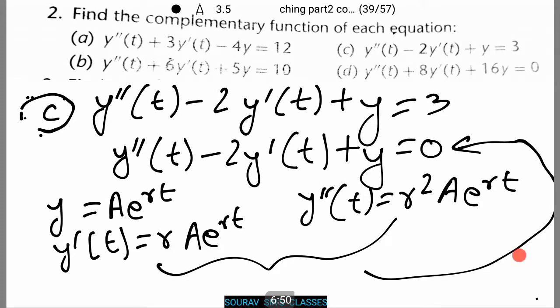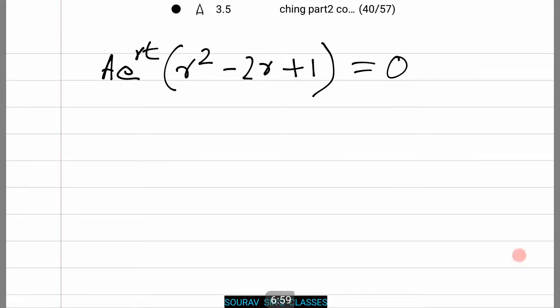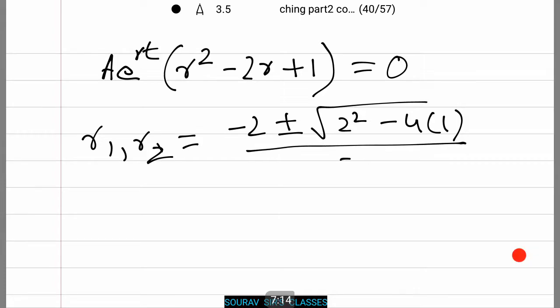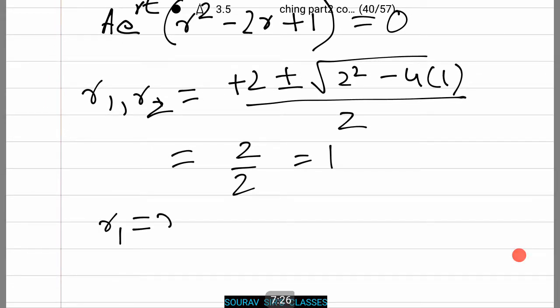Upon substitution we get the following equation. Thus r₁ and r₂ equal minus(-2) plus or minus square root of (2 squared minus 4 times 1) divided by 2, which comes to 2 divided by 2, which equals 1. Thus r₁ equals r₂ equals 1.